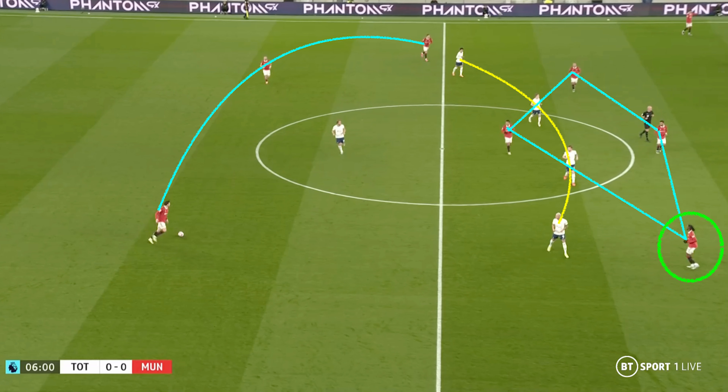Now United have an extra player between the lines, seeing their possession shape shift to a 2-2-6, or a 3-1-6 if Dalot then looks to drop off and hold a deeper position alongside Shaw. This movement from Wan-Bissaka does exactly what it needs to do, and that's why Wan-Bissaka is key to this goal, without even touching the ball.